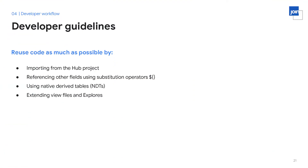Reusability is also key. We encourage utilizing Looker's extends functionality to import from the hub project, especially for fields that have already been defined elsewhere. Along with extends, referencing other fields using Looker's substitution operators — rather than referencing the underlying column directly — makes for a much better developer experience, because the logic only needs to be updated once and the updated logic cascades through the field referenced. Native derived tables can also be very useful if the developer is looking to reuse joins or logic that has already been defined in LookML.